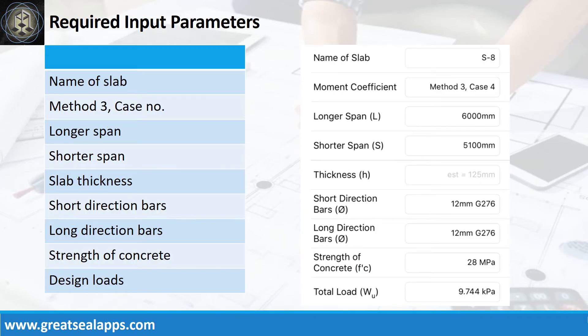Enumerate input parameters required. Name of slab: S8. Case for panel design. Longer span: 6000 mm. Shorter span: 5100 mm. Slab thickness: 125 mm. Main bars: 12 mm bar at grade 276. Strength of concrete: 28 MPa. Factored load: 9.744 kPa.